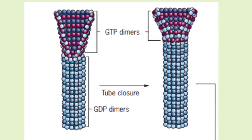Microtubules are highly dynamic structures that are constantly forming and disappearing. They grow by the reversible addition of subunits accompanied by the hydrolysis of GTP. The assembly or polymerization of microtubules begins at sites of orientation referred to as the microtubule organizing centers, or MTOCs. At the beginning of assembly, the tubulin heterodimers associate to form the protofilaments.